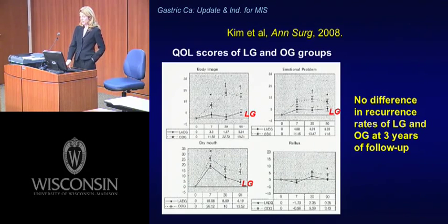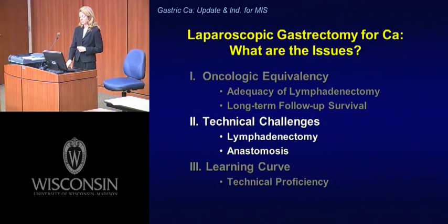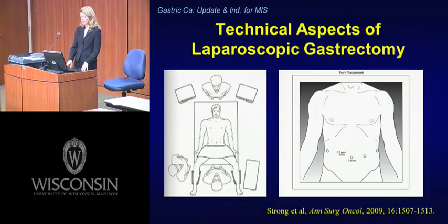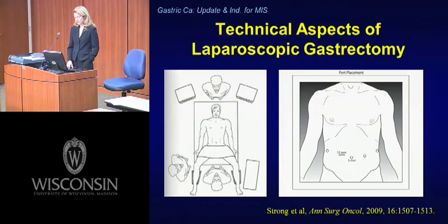Now that the groundwork for oncologic equivalency had been set, the next issue is the technical challenges. It's not an easy operation to perform, especially given that the lymphadenectomy is a very important part of the cancer operation and the anastomosis must also be carefully constructed.